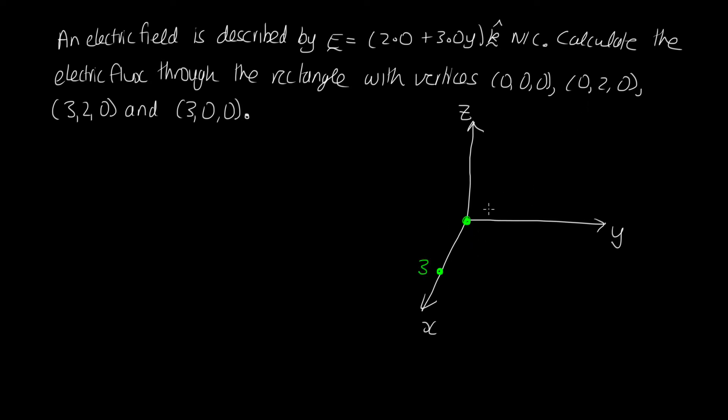And we've got one at (0,2,0). So this is 2 here. And then we've got the third one at (3,2,0). So this is a rectangle.